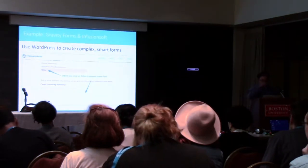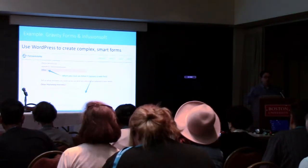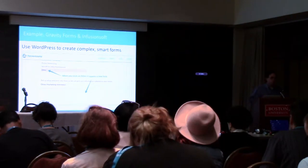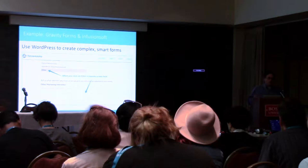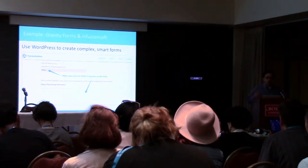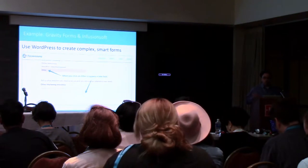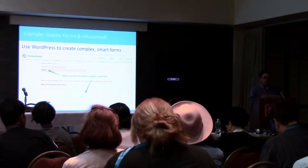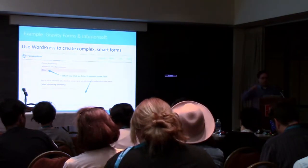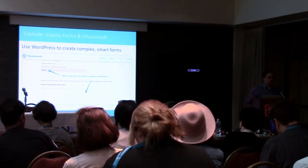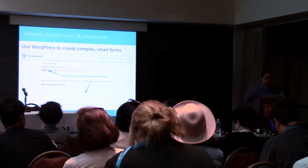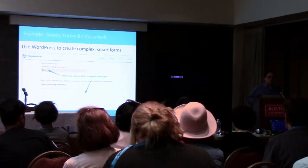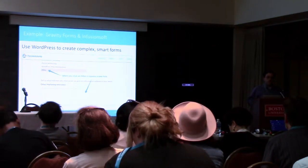One example of this: marketing automation systems often have their own forms, but because we're all using WordPress, we can do really awesome forms. We use Gravity Forms, and with Gravity Forms you can do really cool things, like conditional fields — so if someone selects 'other' in a drop-down, a box appears asking for more information. A lot of times CRM and marketing automation systems don't have forms this advanced. Through WordPress, we can make this whole process much better.